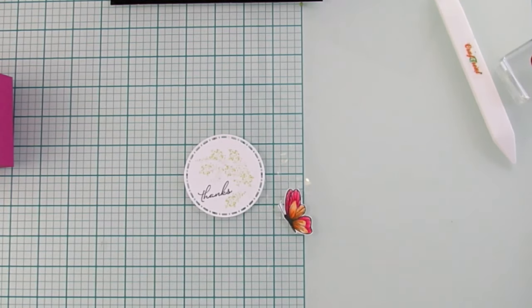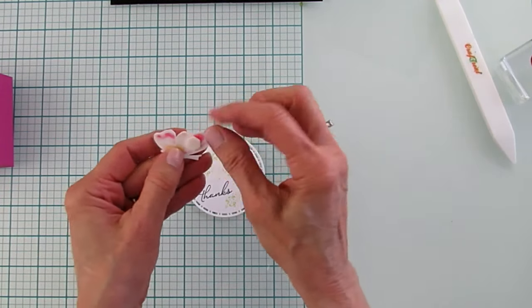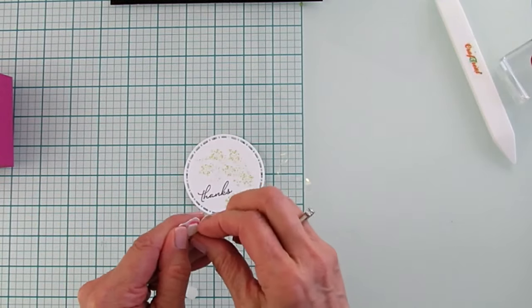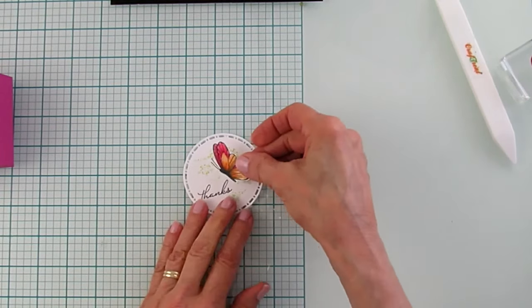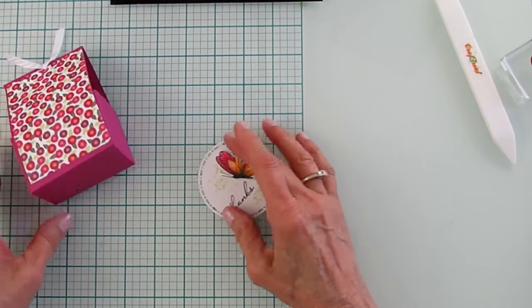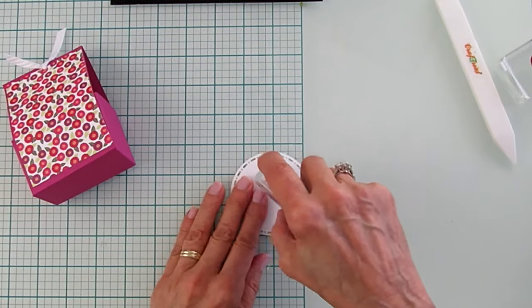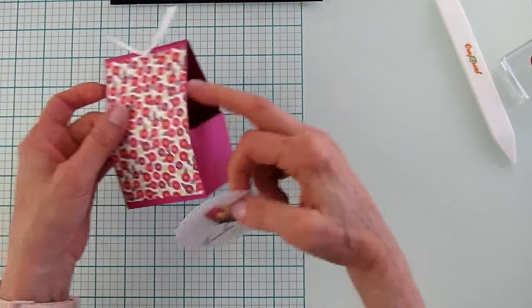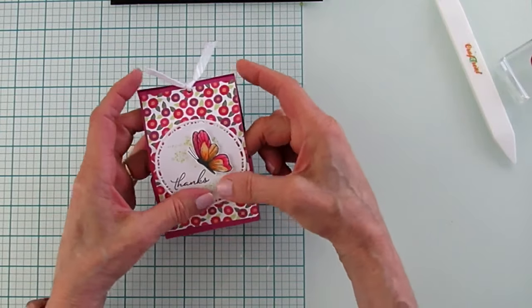And then we are going to take some Dimensionals, and we are going to put two on the back here. And we're going to just place the butterfly on here. And I'm going to use my Stampin' Seal Plus, and just put it on the bottom of this. Because this is curved here. And then you're just going to set it on here, and we're going to do a final little touch.